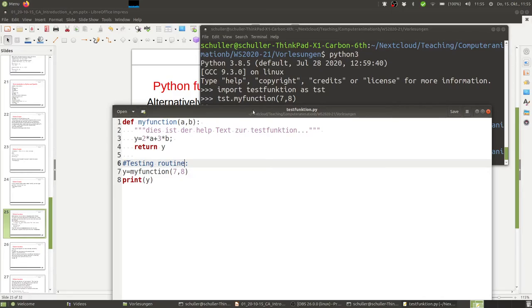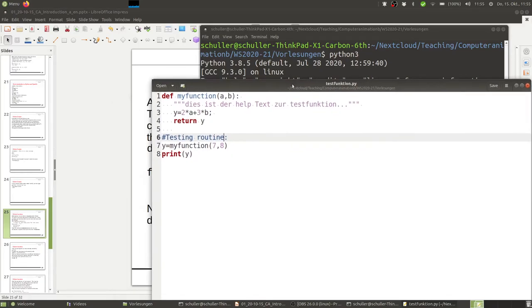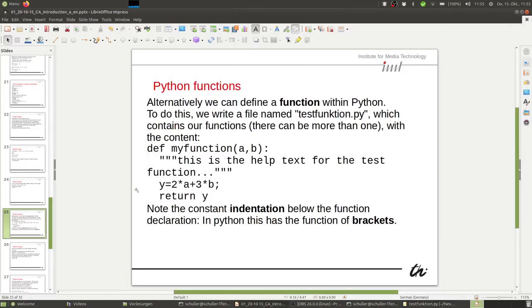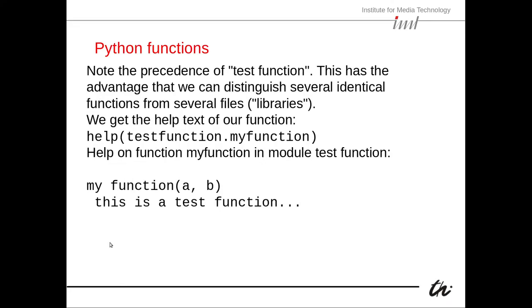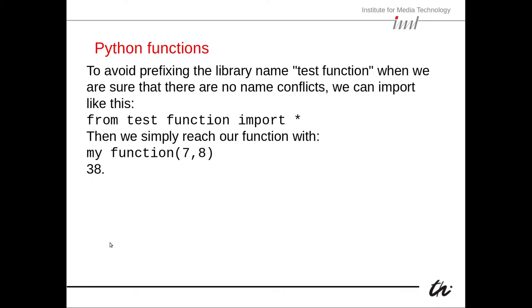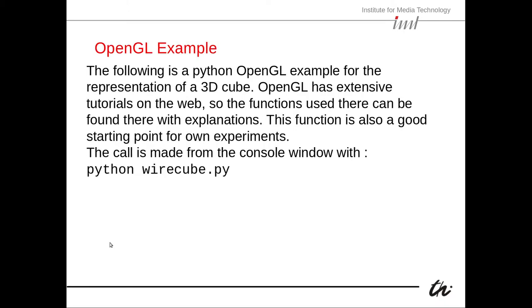That's basically software technology. For each function you write, you should have a testing routine in the same file to see if it works. Now let's come to OpenGL — the following is a Python OpenGL example for the representation of a 3D wire cube.